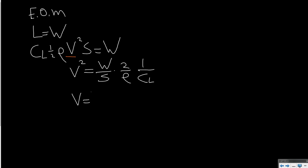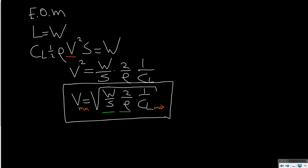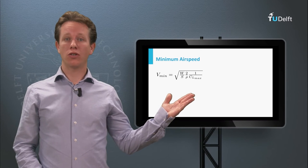To find airspeed we take the square root of weight over S, times 2 over rho, times 1 over CL. Now we are interested in the minimum airspeed, and since we are considering one aircraft weight, one wing surface area, and one specific altitude, you can directly see that if you make CL maximum, you will obtain minimum airspeed. With this equation we can calculate the minimum airspeed of any given aircraft if we know the maximum lift coefficient. We have just derived the equation for minimum airspeed.